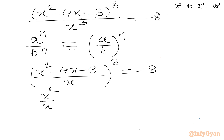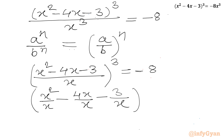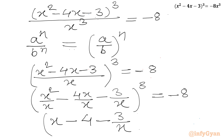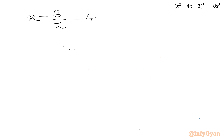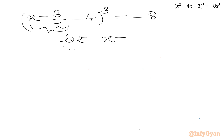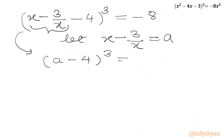I can expand (x² - 4x - 3) / x as x - 4 - 3/x, giving us (x - 4 - 3/x)³ = -8. Now using substitution, let a = x - 3/x, so our equation becomes (a - 4)³ = -8.